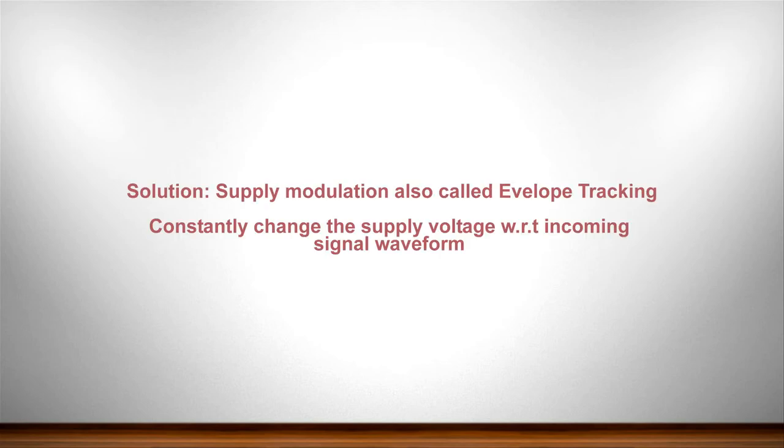The solution for back-off efficiency, one of the solutions, is envelope tracking, and it is also known as supply modulation. The reason it's called supply modulation is that we are constantly changing the supply of the power amplifier.